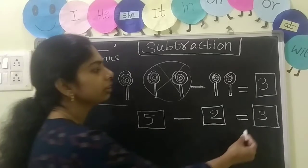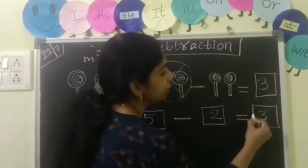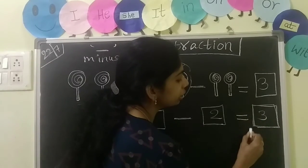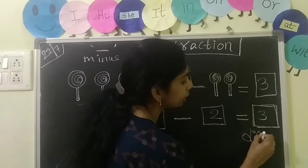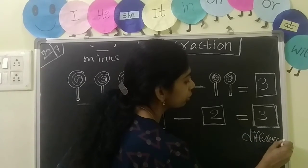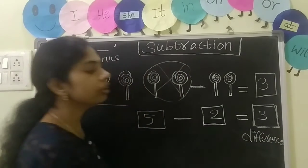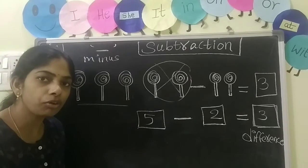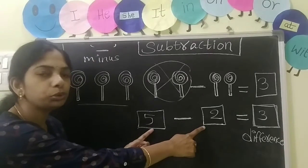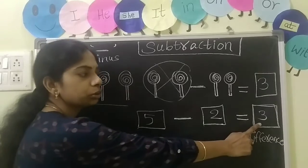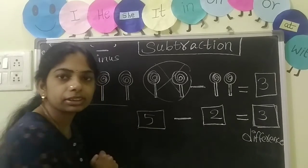So the answer is 3, and this is the answer. This is called the difference of the 2 numbers. What is this called? Difference. Difference of these 2 numbers.